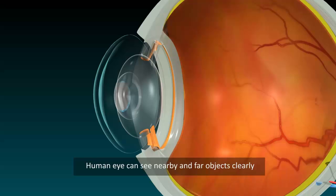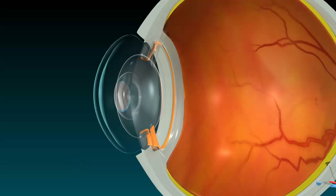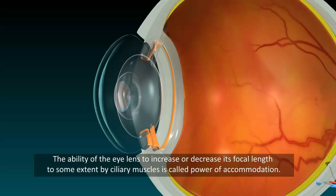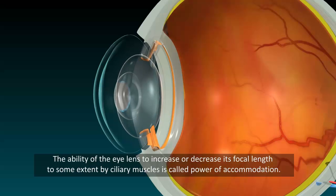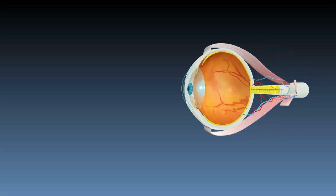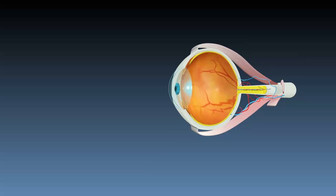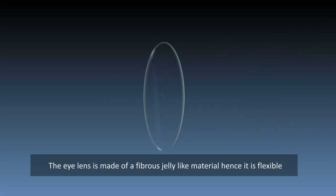Power of accommodation is the ability of the lens to increase or decrease its focal length to some extent by ciliary muscles. Working of the lens: the lens is made of a fibrous jelly-like material and hence it is flexible.